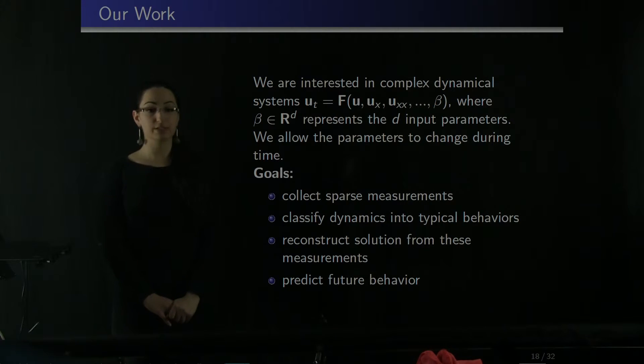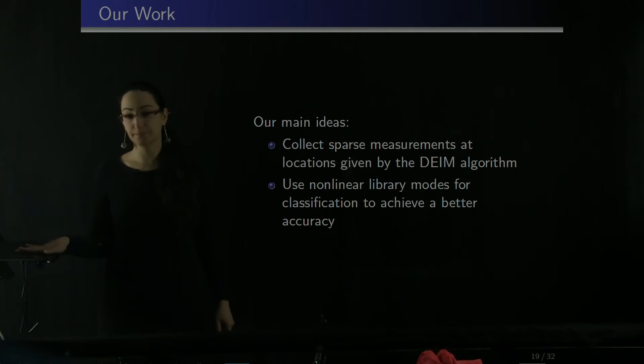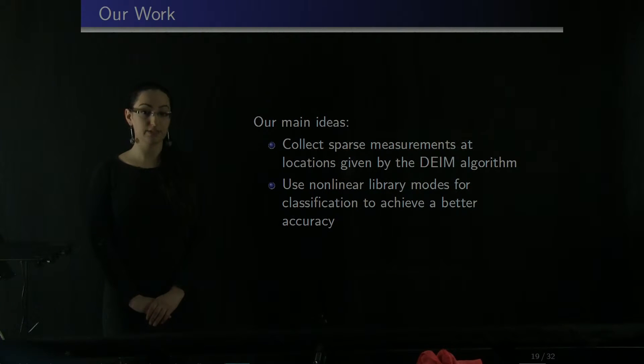Let's talk about our work. We considered nonlinear dynamical systems that have parameters, and those parameters can change during time. I mean at some time interval they take specific value, then in another time interval they can switch their values to something else. Our goal is to collect sparse measurements, classify those measurements, which means find the parameter regime that this measurement is in, then reconstruct full solution, and then predict the future behavior. Our main ideas in this paper were to collect measurements at the locations given by DEIM's algorithm and also use nonlinear library mode for classification purposes.